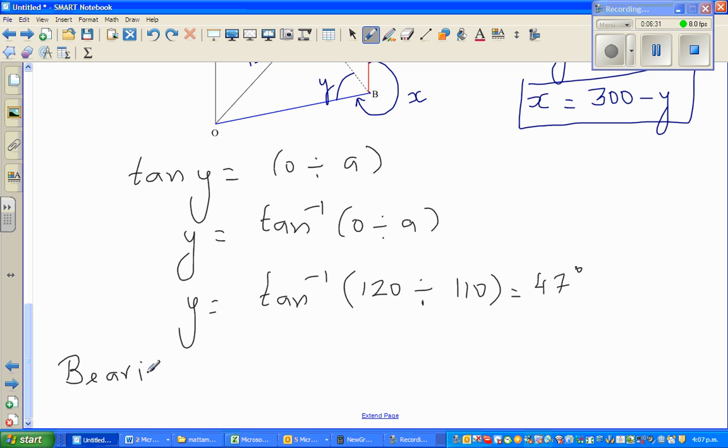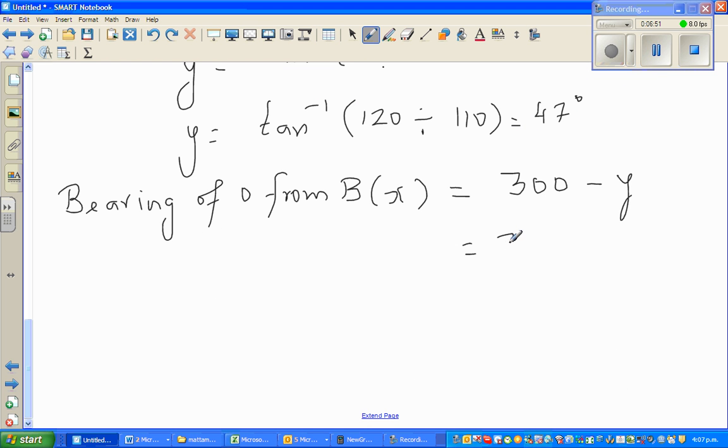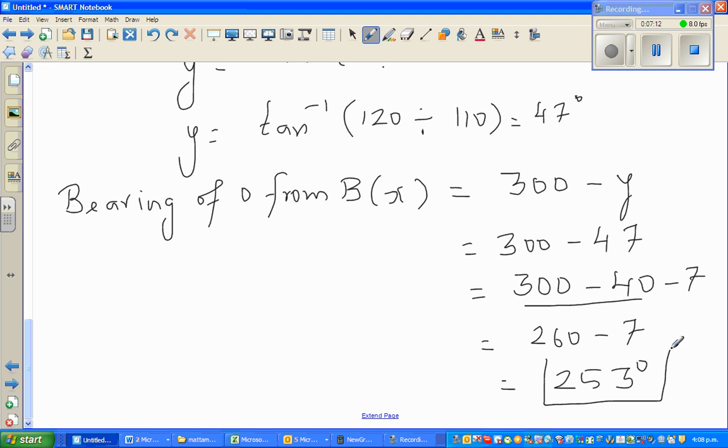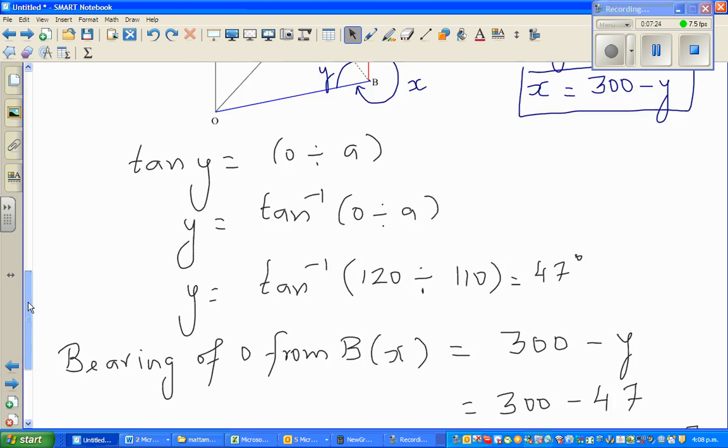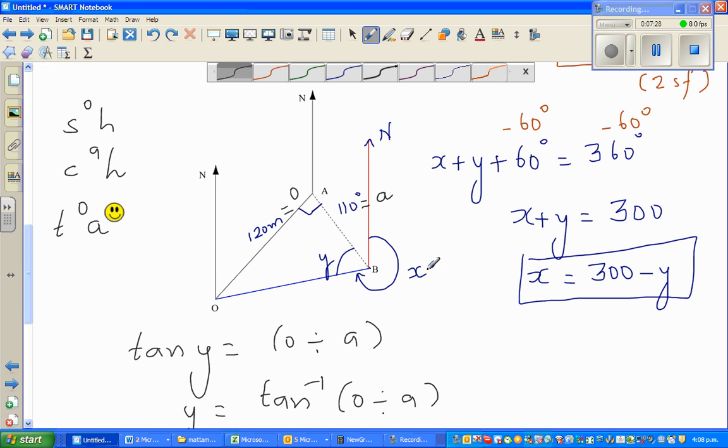The bearing of O from B is x, which is 300 minus y. So 300 minus 47, which is 260 minus 7, which is 253 degrees. Let's check the answer. 300 minus 47 is 253 degrees. So the bearing of O from B is 253 degrees.